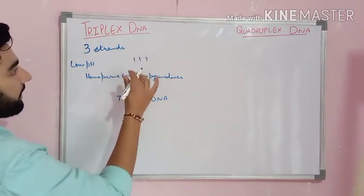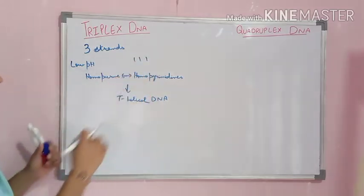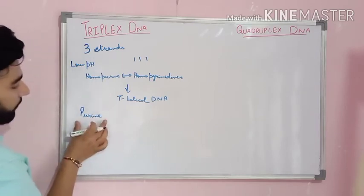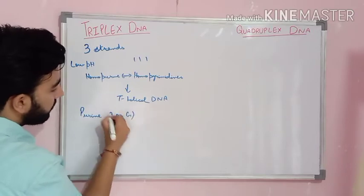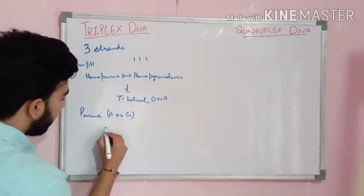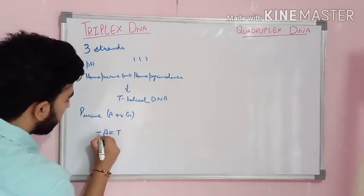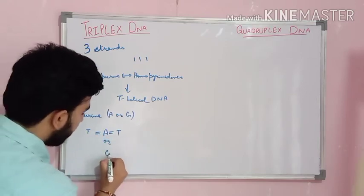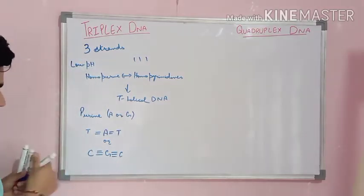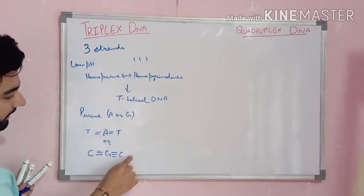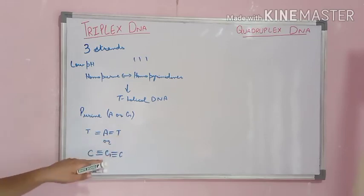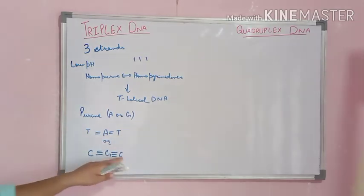The triple helical DNA consists of three strands. The central strand must always be a purine — either adenine or guanine. If the central strand is purine, then if adenine is the central strand, thymine is present on the other two strands; if guanine is in the central strand, then cytosine is present in the other two strands.